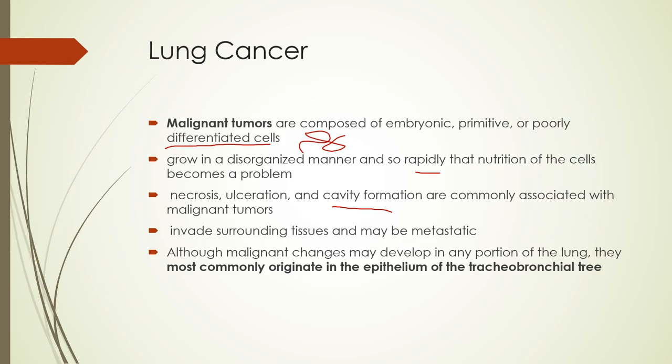Malignant tumors can invade surrounding tissues and may be metastatic — they tend to grow fast and can affect other organs. They develop in any portion of the lung and most commonly originate in the epithelium of the tracheobronchial tree, which means bronchoscopy can sample them via cytology, histology, or lymphatic tissue sampling. One of the best things for lung cancer is low-dose CT scans, which can catch it much earlier than it would show up on an x-ray or bronchoscopy.